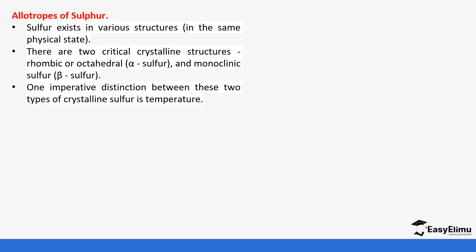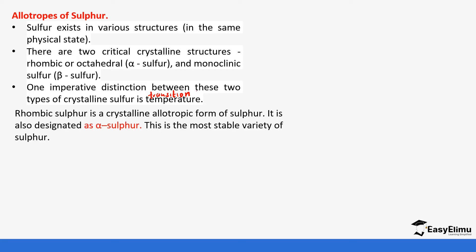Rhombic sulfur is also referred to as alpha sulfur, and monoclinic is referred to as beta sulfur. What distinguishes them is the temperature — we call it the transition temperature. Their existence depends on this temperature: some exist above it and some exist below it. Rhombic is the most stable crystalline allotropic form.